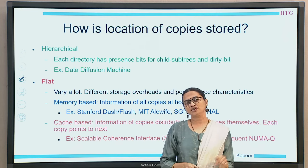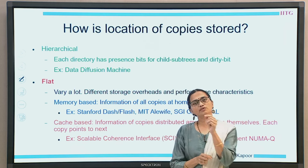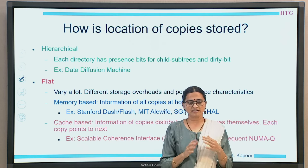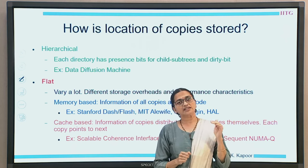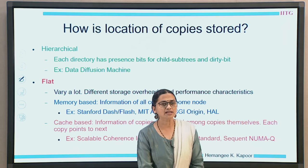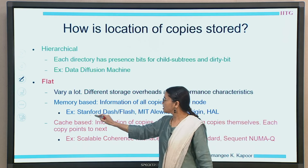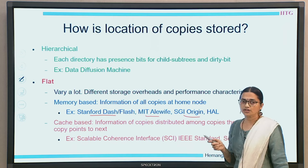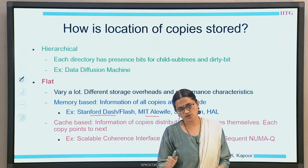The other distributed structure is the flat directory. Here the information about sharers is kept with each individual memory bank, and essentially with every block of memory. If the memory has 1000 blocks, it has 1000 directory entries, each keeping information of which nodes are sharing that particular data block. This memory-based flat distributed structure is implemented by the Stanford DASH processor, the MIT ALEWIFE, and the SGI Origin systems - three to four real-life implementations that use this flat memory-based structure.